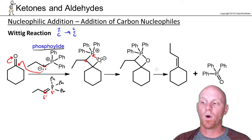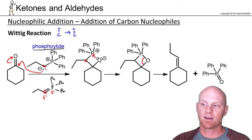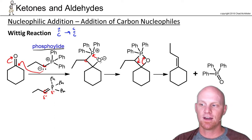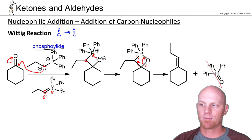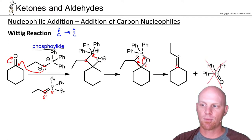Believe it or not, we are just one step away from our alkene. We are going to break two bonds simultaneously — the carbon-oxygen bond and the carbon-phosphorus bond — giving us a double bond between the two carbons and a double bond on the phosphorus-oxygen side. The other two sigma bonds are broken, giving two separate products. We don't really care about the phosphorus-oxygen byproduct; our organic product is the alkene, and we've created our brand new carbon-carbon double bond.